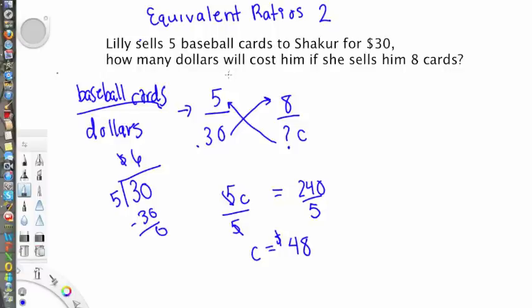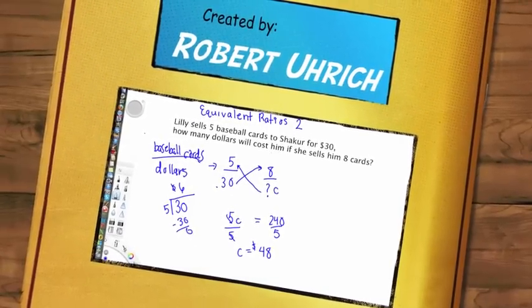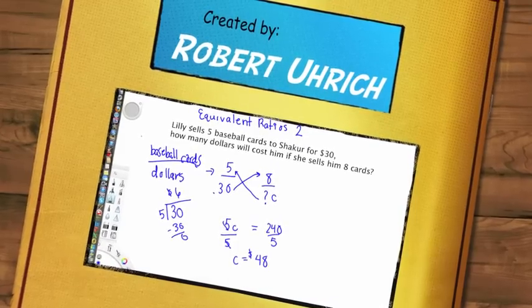So there's two strategies when we're trying to find equivalent ratios. We could find the unit rate - that's a great strategy. Find the unit rate for one card, then we can figure out the cost for 8 cards. Or we can cross multiply, and we'll take a look at a couple other strategies in class. I hope this was helpful.